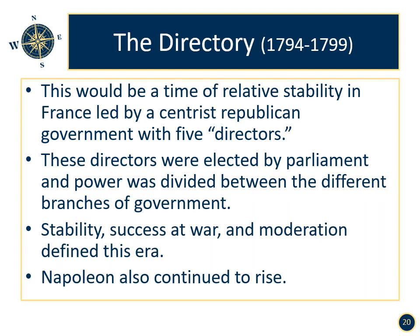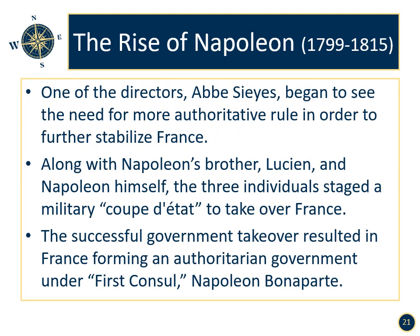Napoleon also continued to rise during this time as a successful military commander. The rise of Napoleon, 1799 to 1815. One of the directors, Abbé Sieyès, began to see the need for more authoritative rule in order to further stabilize France. Along with Napoleon's brother Lucien and Napoleon himself, the three individuals staged a military coup d'état to take over France. The successful government takeover resulted in transforming the government into an authoritarian one under First Consul Napoleon Bonaparte.